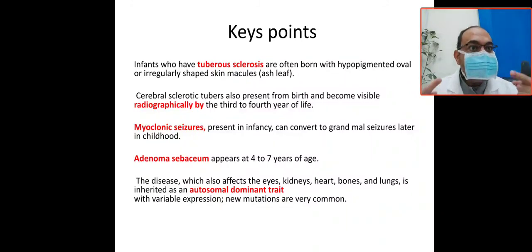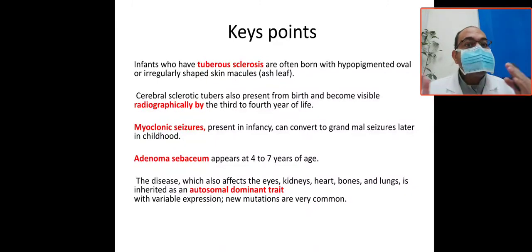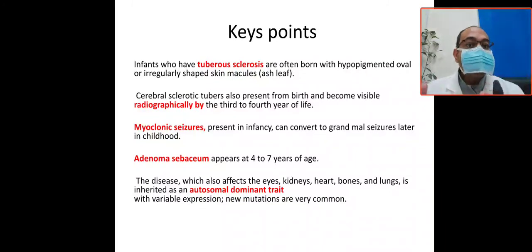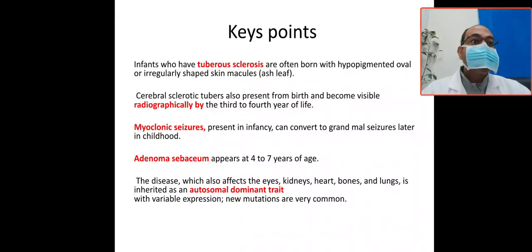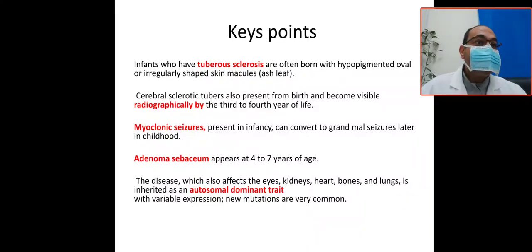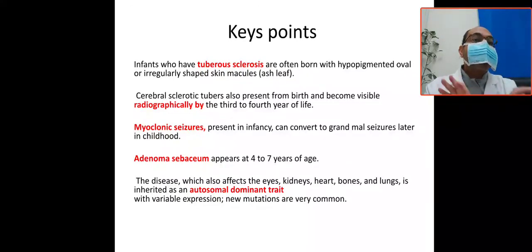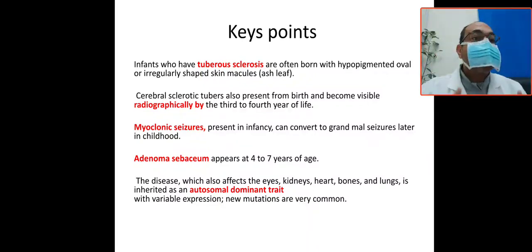Refer to a pediatric dermatologist and examine family members, as the disease is autosomal dominant with variable penetrance and new mutations are very common. Perform immediate neurological assessment for seizures, refer to an ophthalmologist to rule out retinal astrocytomas, do echocardiography to rule out rhabdomyomas, and abdominal ultrasound to rule out renal and liver angiomyolipomas. Screen for tumors in the brain, eyes, heart, kidneys, and liver.